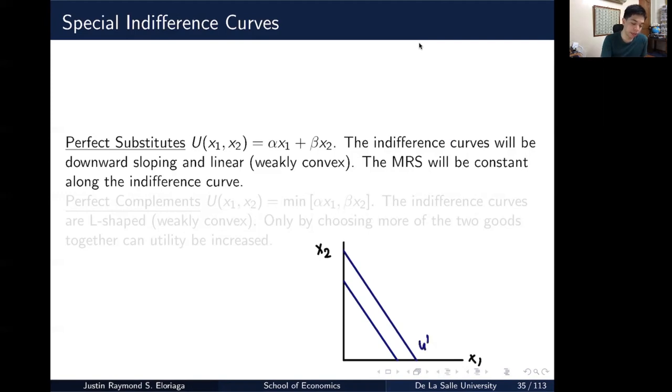This represents u1, a higher utility level than say u0. And notice a particular property with it is that the MRS will be constant along the indifference curve and you see that this is the case. So whether you're at point A, at point B, at point C, your MRS is relatively the same. It remains constant. It doesn't change.